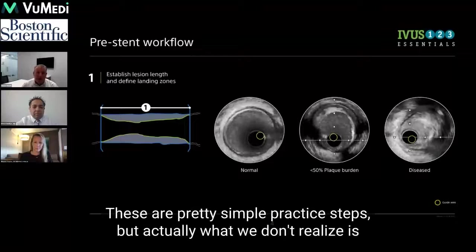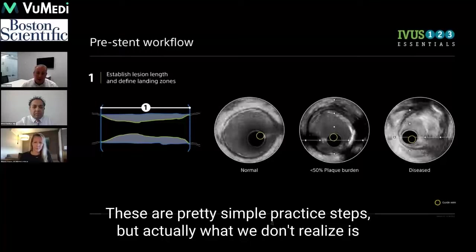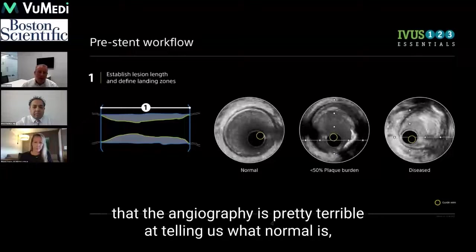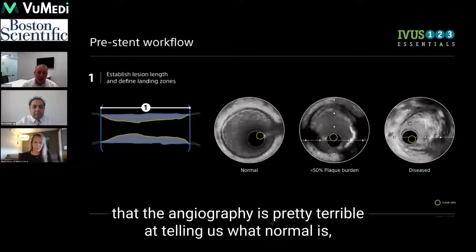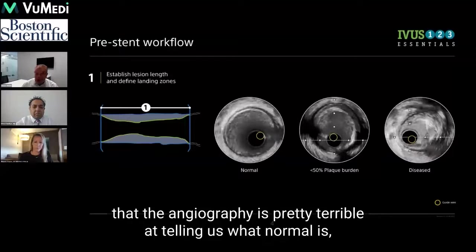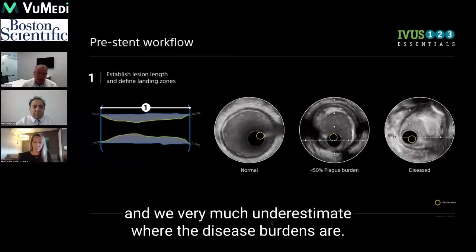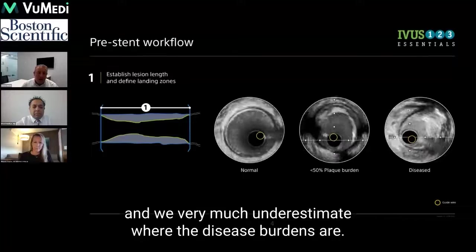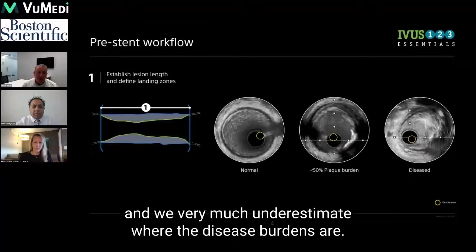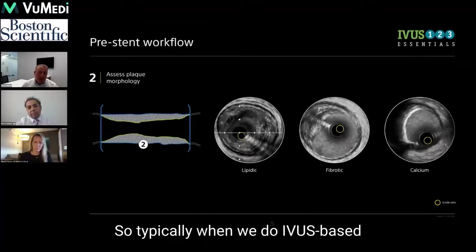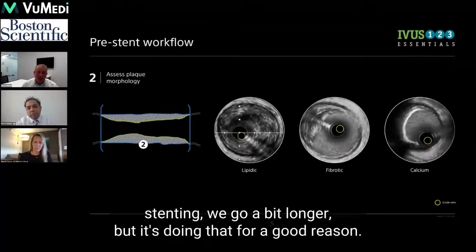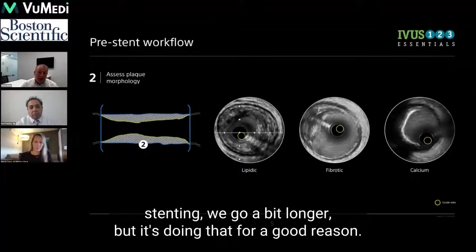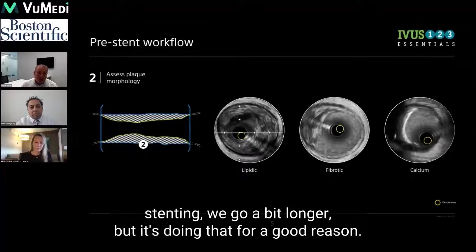These are all fairly simple practice steps, but what we don't realise is that angiography is pretty terrible at telling us what normal is, and we very much underestimate where the disease burdens are. So typically when we do IVUS-based stenting, we go a bit longer, but it's doing that for a good reason.